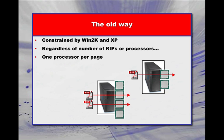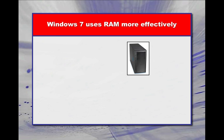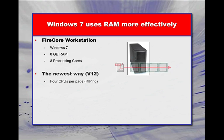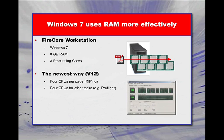The big difference in version 12 is the ability to take advantage of how Windows 7 uses RAM across the eight processing cores that now ship with Rampage workstations. Specifically, it allowed our engineers to dedicate four processing cores to a single page, and use the remaining cores for other workflow tasks such as preflighting or screening.